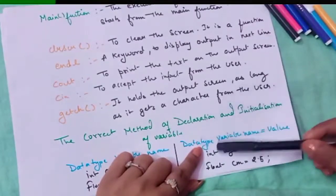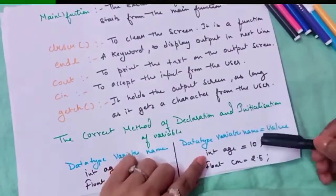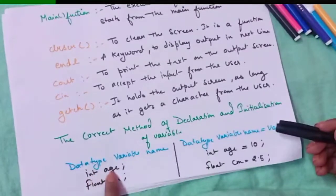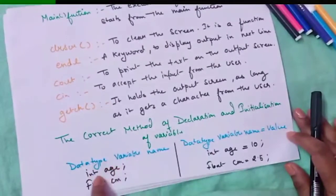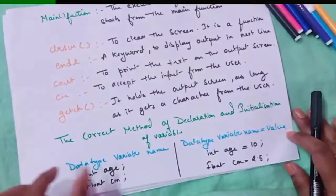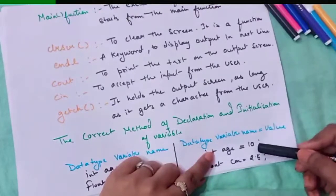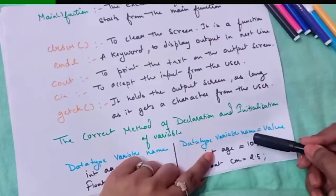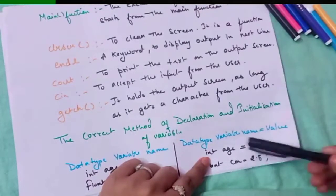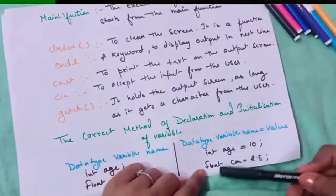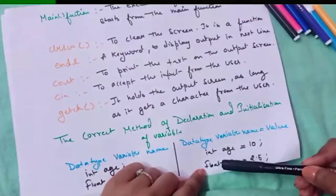Another way is to declare and initialize at the same time: data type, variable name, equals to value. For example, `int age = 10`. When we write just the variable with its data type, it is called declaration — no value is given. When we assign a value, it is called initialization — an initial value is given to the variable. For example, `float cm = 2.5` because float holds floating point values.